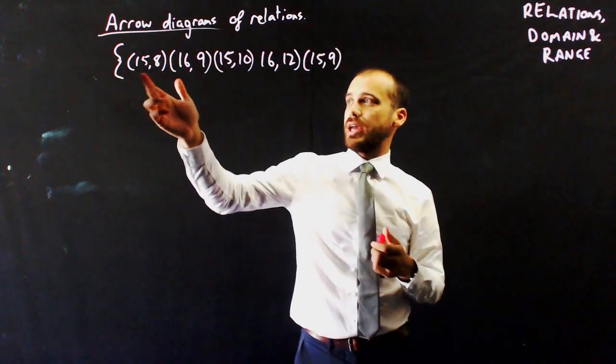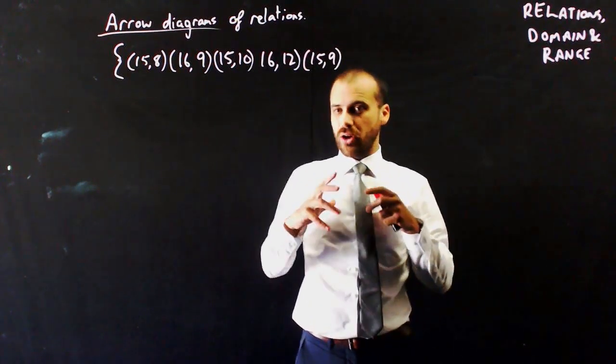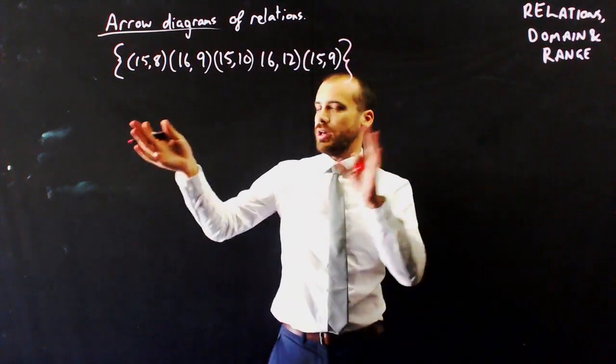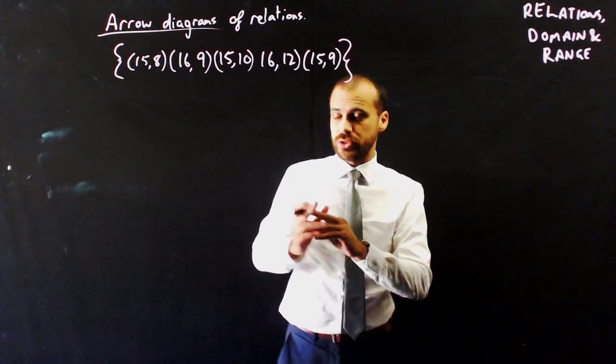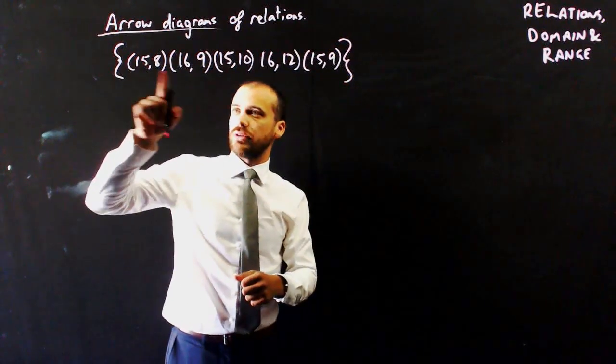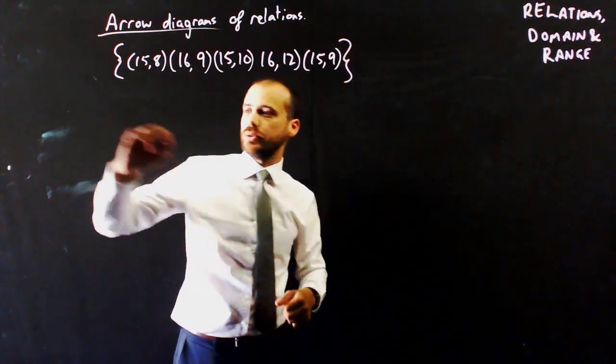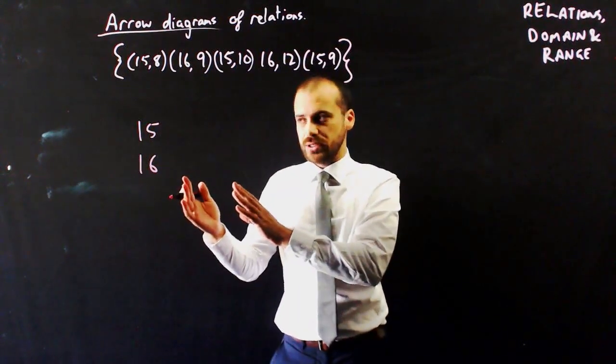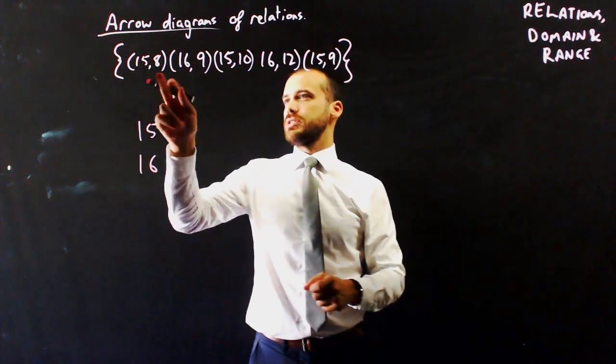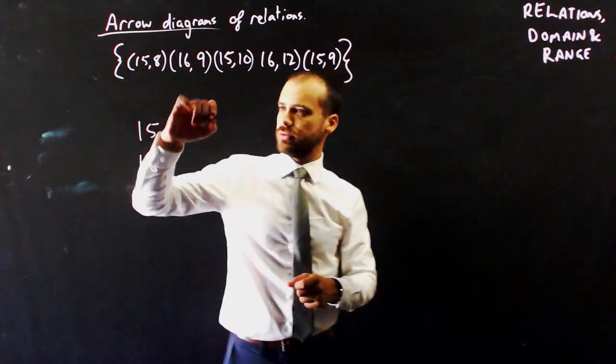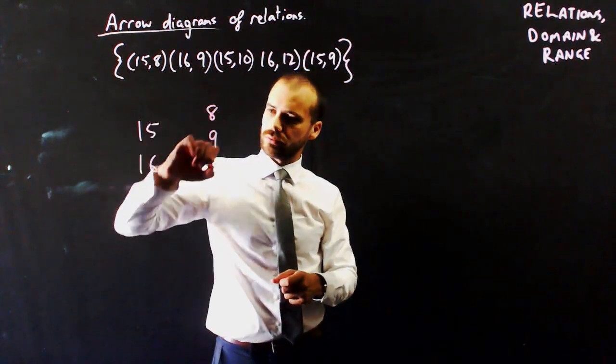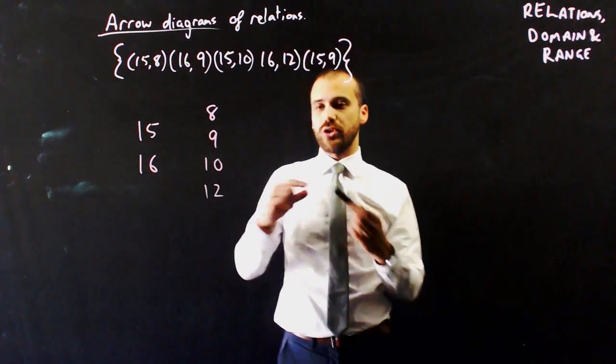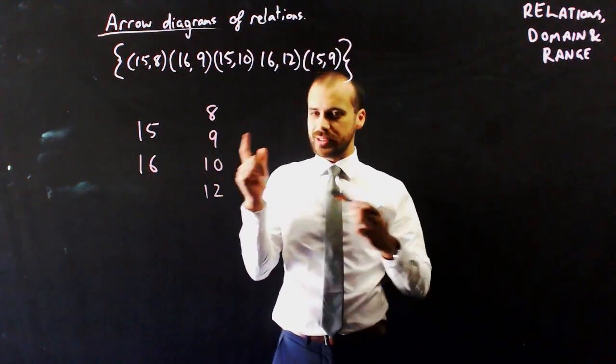So here I'm back to ages and shoe sizes, and I can represent my x and y coordinates, just put me a bracket on there, represent my x and y coordinates using what's called an arrow diagram. So writing down all of my x and y coordinates, I have 15 and I have 16, and I write them on the left hand side, all of my shoe sizes, 8, 9, 10, and 12.